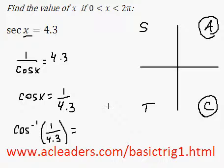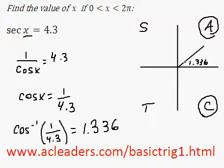Cosine inverse of 1 over 4.3 is 1.336. So that is our first answer in the first quadrant. Right here, 1.336.